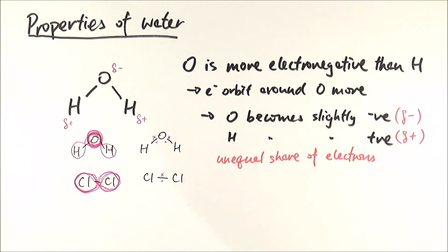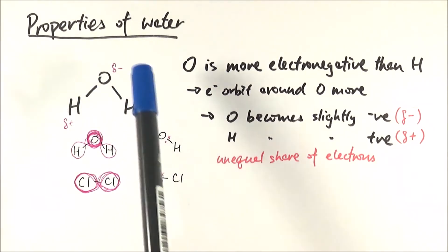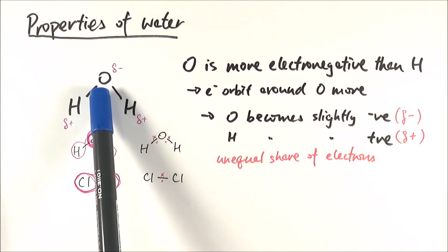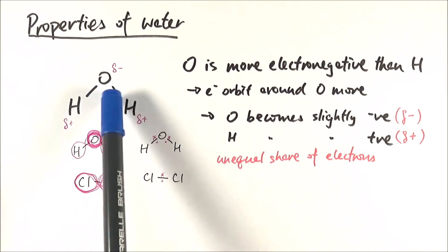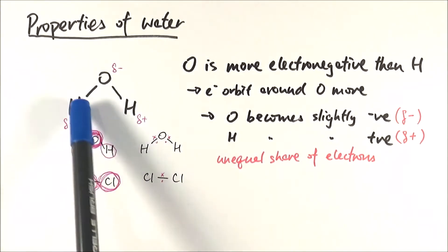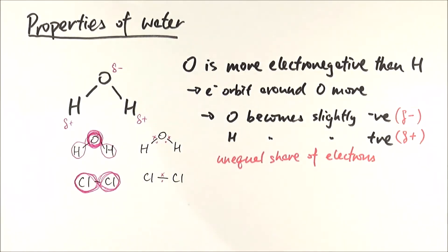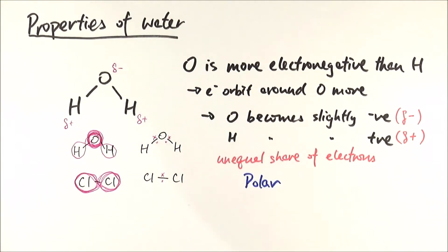To summarise: oxygen is more electronegative than hydrogen, so electrons orbit oxygen more. Because electrons are negative, oxygen becomes slightly more negative — delta negative — while hydrogens are slightly more positive — delta positive. If a molecule exhibits this unequal share of electrons creating regions of slight charges, we say it is polar — simply a term for a molecule with slightly positive and slightly negative regions.